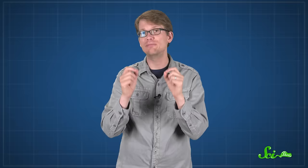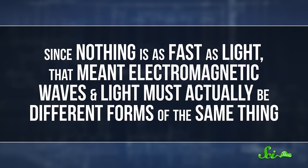He figured out that all of these things were connected by observing how magnets could affect currents, and currents could affect magnets. He theorized that they were all doing that with electromagnetic waves, which spread out through space from their point of origin, potentially forever. He measured how fast these waves were moving, and found that they traveled at the speed of light. And since nothing is as fast as light, that meant electromagnetic waves and light must actually be different forms of the same thing.